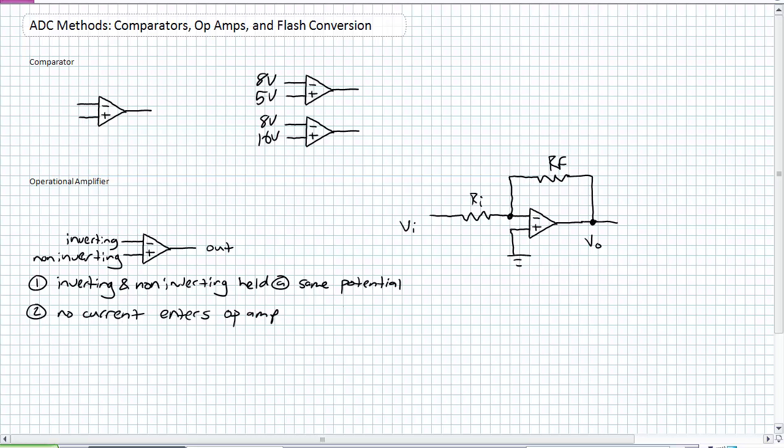So this comparator here I've got up on the upper right. The plus is being held at 5 volts. The minus is at 8 volts. The plus is not higher than the minus, so that answer is false. Whereas the one immediately below it, is 16 volts higher than 8 volts? The answer is yes, true it is. Very simple review of the comparator.